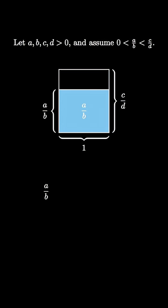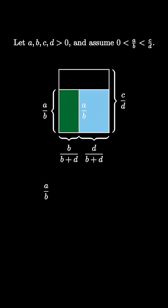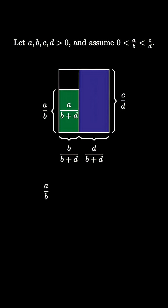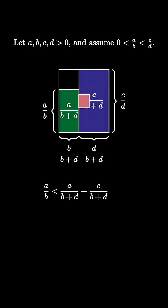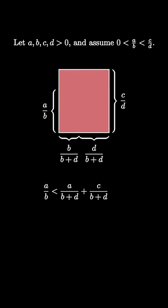We can split the side of length 1 into segments of length B over B plus D and D over B plus D, and then create two rectangles: one with area A over B plus D and one with area C over B plus D. These two rectangles cover the first rectangle, meaning A over B is less than the sum of A over B plus D and C over B plus D. But these two rectangles lie completely inside the full rectangle with an area of C over D, so that the sum of A over B plus D and C over B plus D is less than C over D.